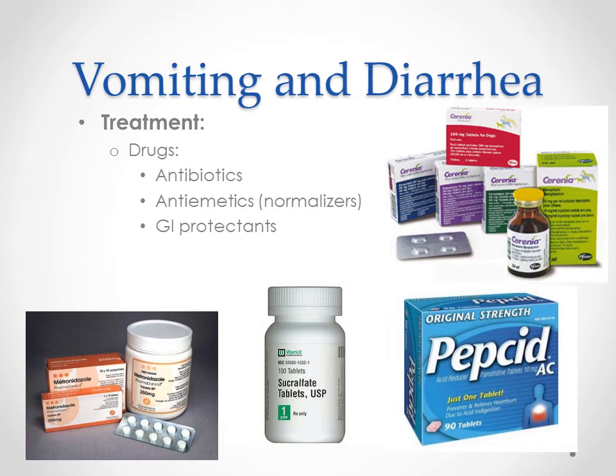Sucralfate and Pepcid are gastroprotectants, protecting the upper intestinal tract and stomach. And then Cerenia — Cerenia is an anti-emetic, which means it prevents our patient from vomiting. It's a canine and feline-only product, and it has been revolutionary for our patients in preventing and treating nausea and vomiting. It's a really powerful drug. The cool thing about Cerenia is that it also decreases abdominal pain — they're not entirely sure of the mechanism, but it's a side effect we've been seeing, which is exciting because a lot of times our patients have pain when they're vomiting.